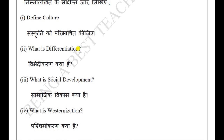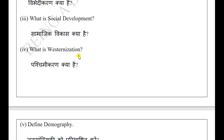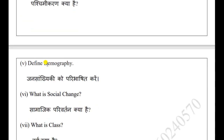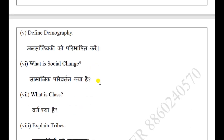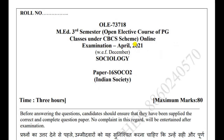Coming to the other short answer topics in the compulsory question: What is differentiation, what is social development, what is westernization, define demographic transition, define population change, what is social change, what is class, explain tribes. All these answers are only 6 to 10 lines maximum — don't write more than this. So this was your question paper from the year 2021.